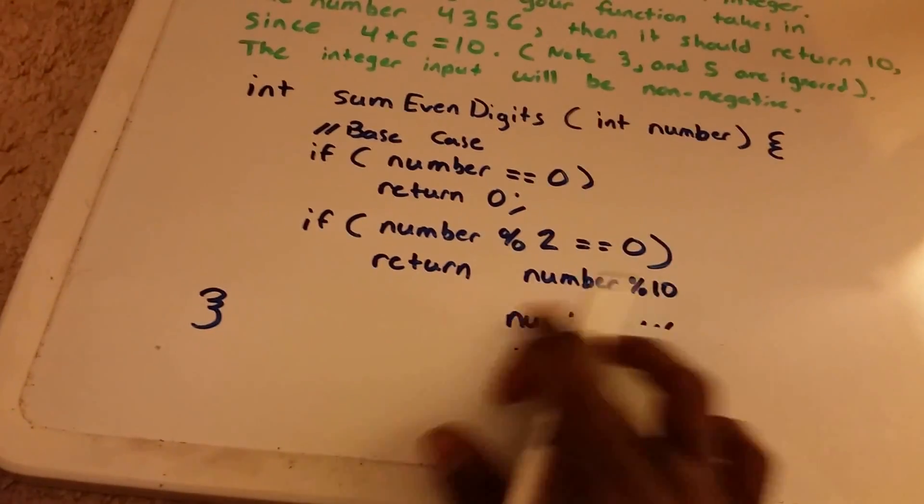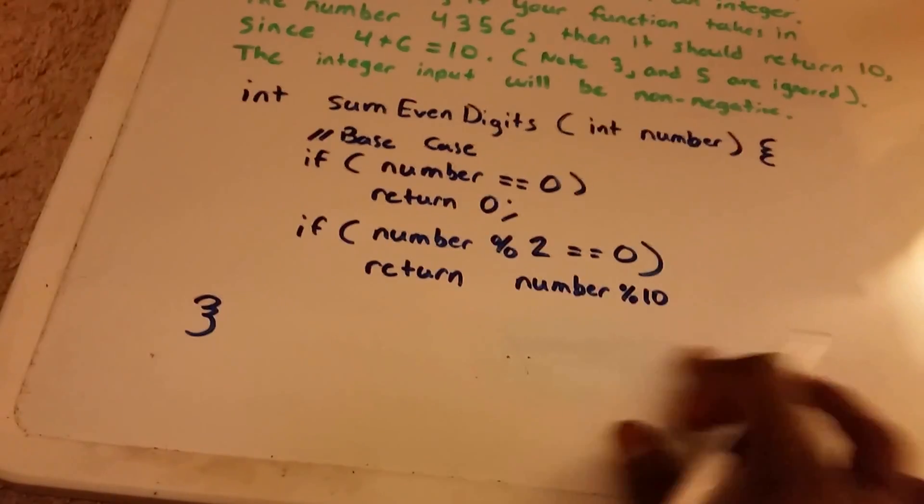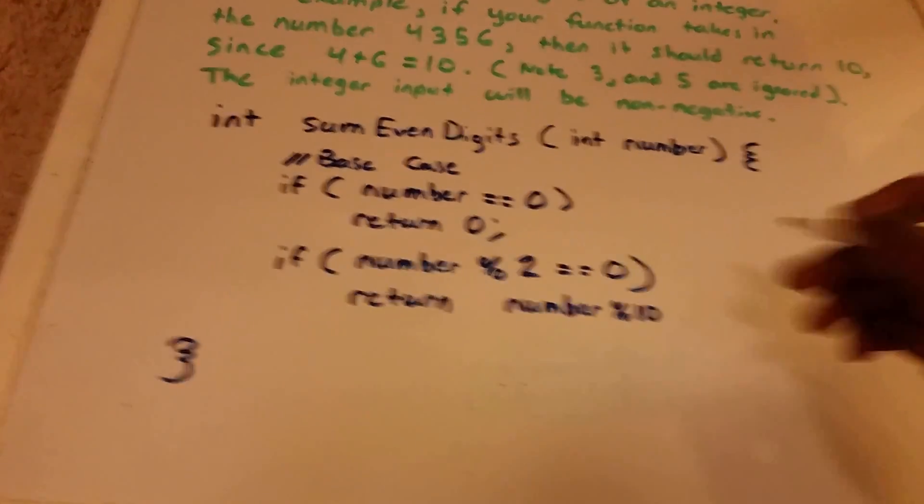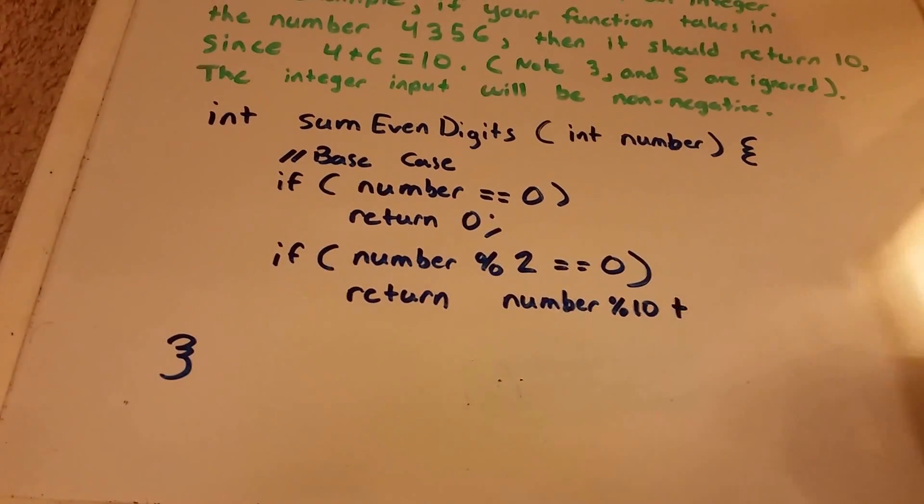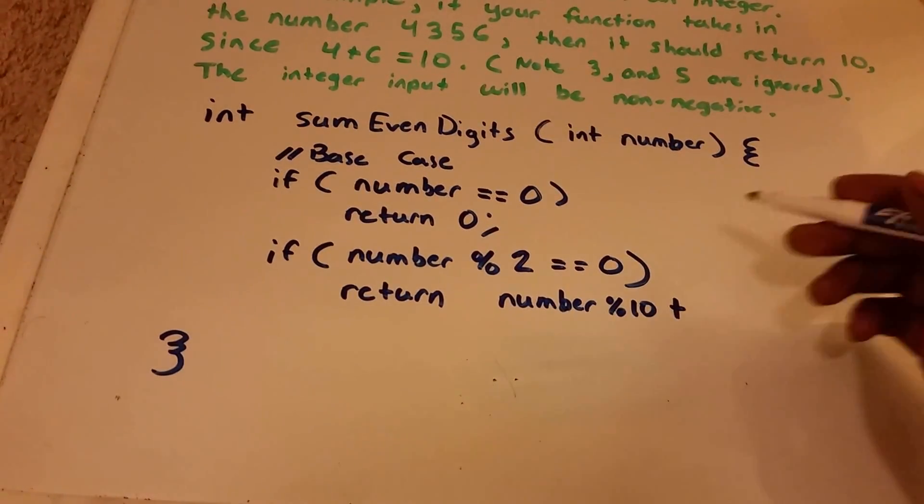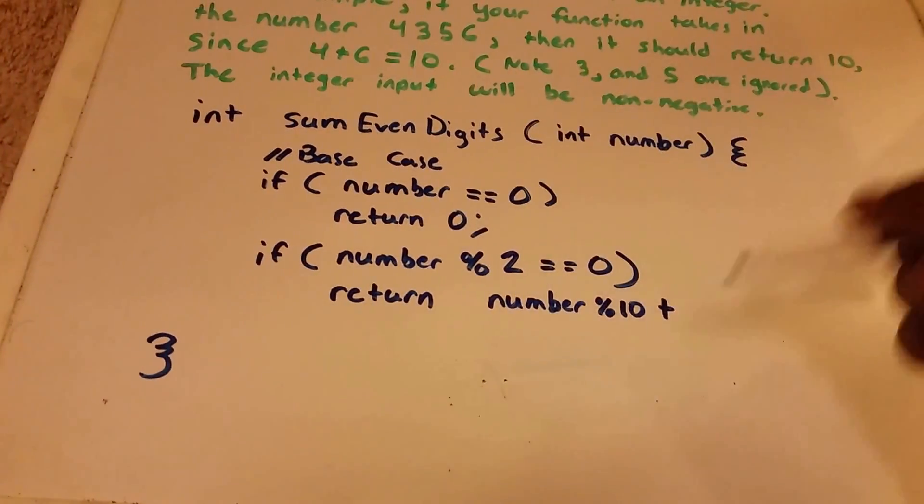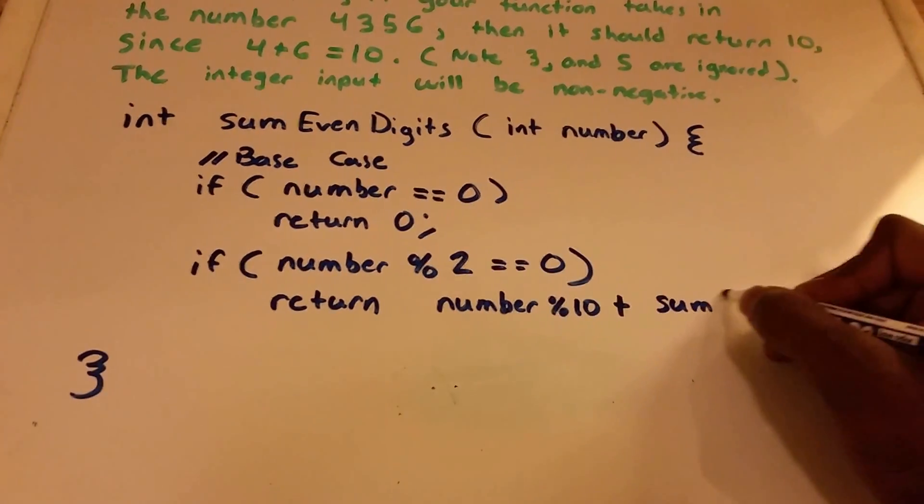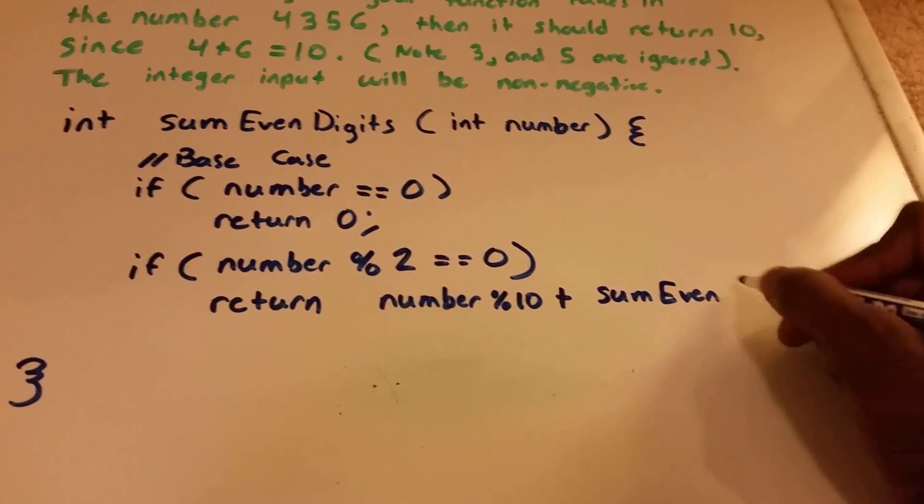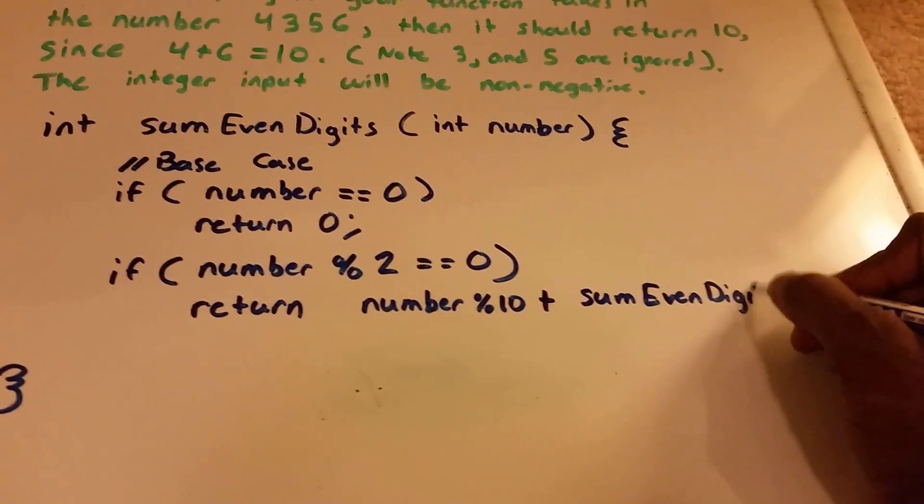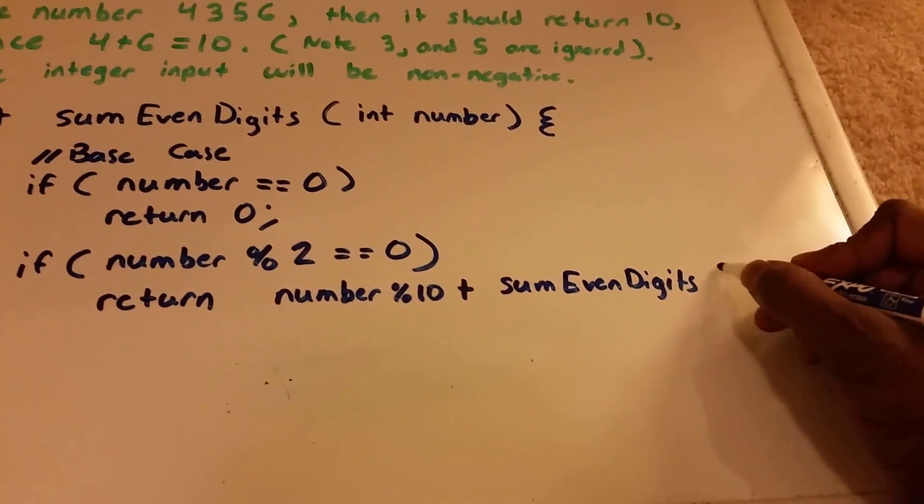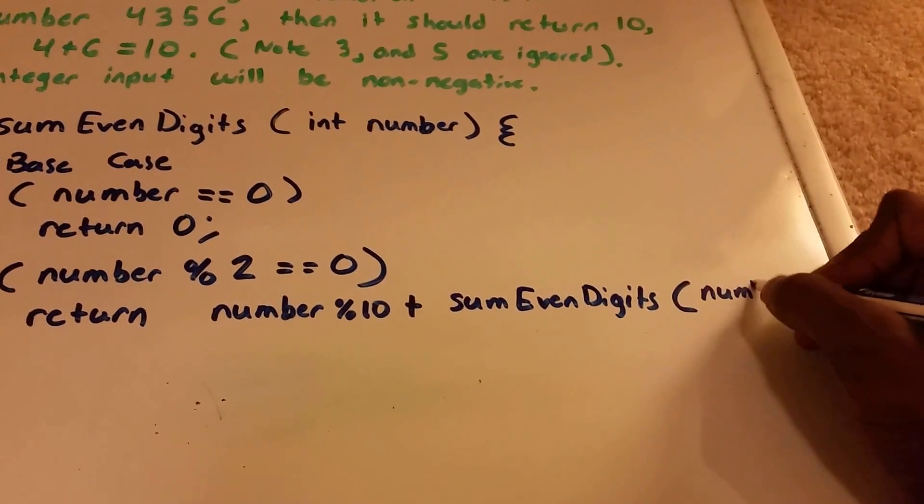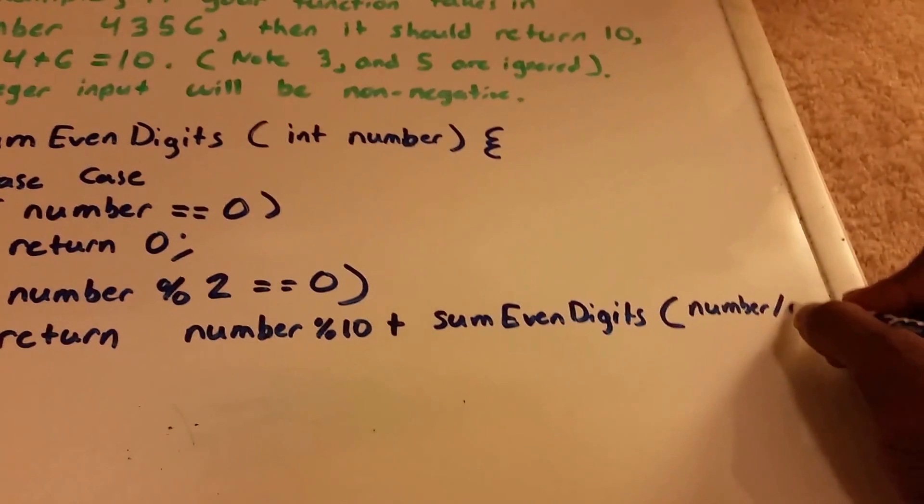Let's continue with this. That's the reason why we're modding that number by 10. We're going to add this to our recursion. This is the recursive case. So we're going to add it to SumEvenDigits.